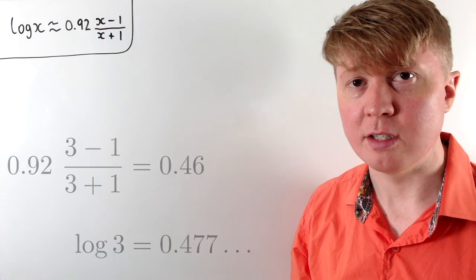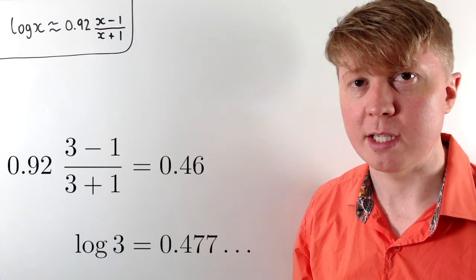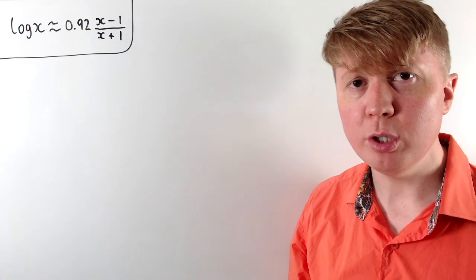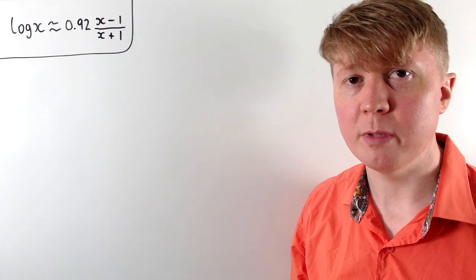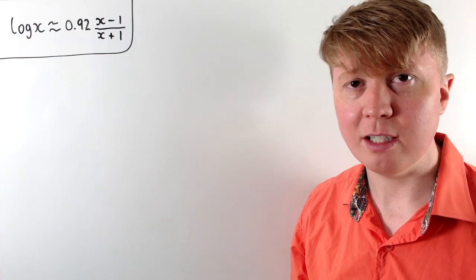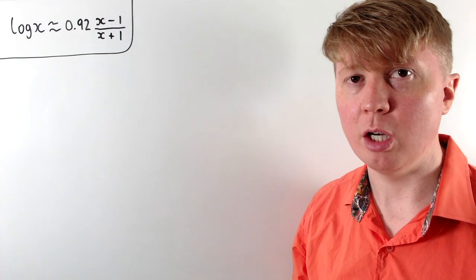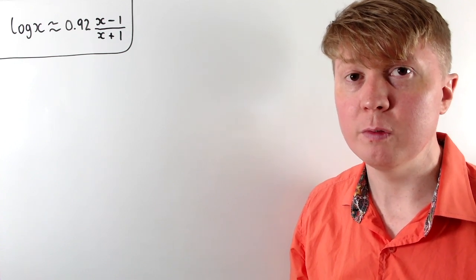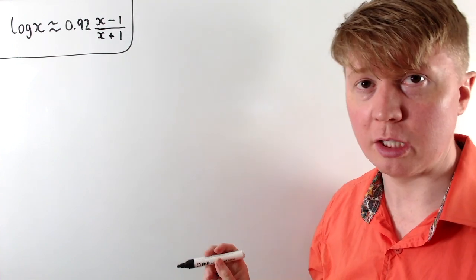And if we were to put in x equals 3, for example, we would get a less than 4% error. But if we were to try and put in a large number, the approximation would actually be really bad. So there's an extra little step we need to apply if we're working with a large or very small number, which we'll look at before exploring where this function actually came from.